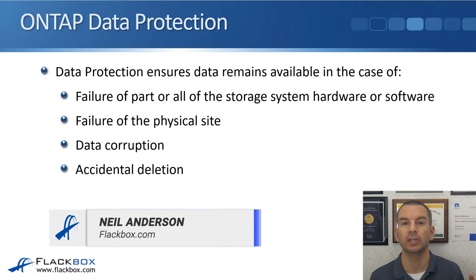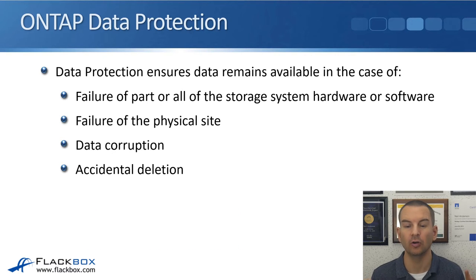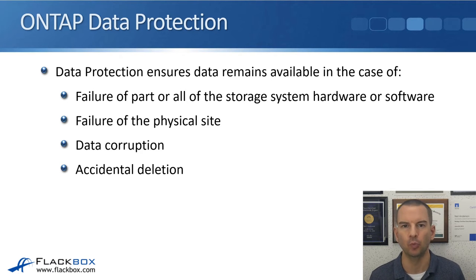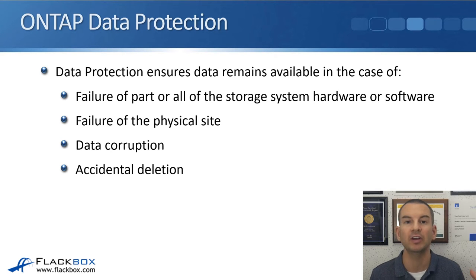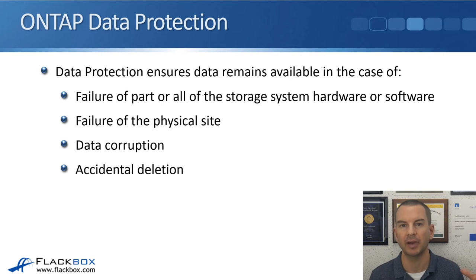Data protection ensures that your data remains available in the case of failure of part or all of the storage system, hardware or software. Part would be, for example, one controller in the cluster failing; all of the system failing would obviously be the entire cluster failing. Other things that can happen would be failure of the entire physical site — a single hardware component, the ONTAP operating system, or even the entire site going down because of a flood, fire, or complete power outage. ONTAP has data protection solutions for all of those incidents.